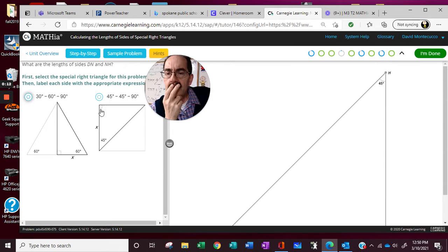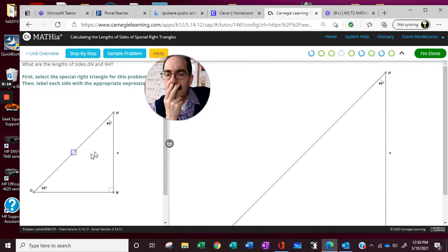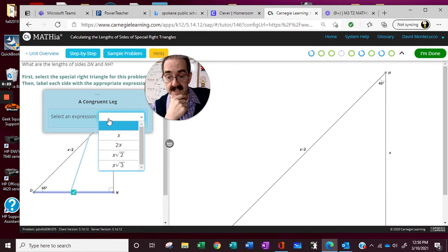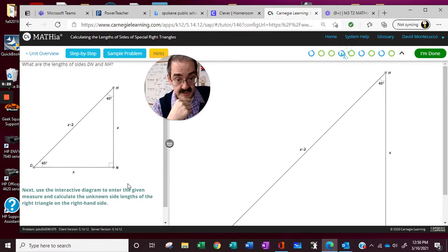Looks like a 45, 45, 90, and we know that 45, 45, 90 is radical 2 for the hypotenuse, and this has to be the same as the other leg because it's a square.